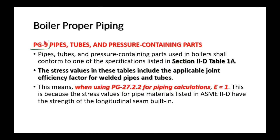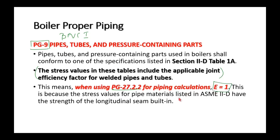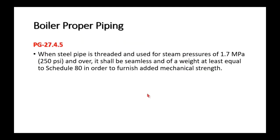PG-9 in BPVC Section I says pipes and tubes shall conform to one of the approved specifications, and that stress values in the tables include the applicable joint efficiency factor for welded pipes and tubes. So when using PG-27.2.2 for piping calculations, E must equal 1 — the penalty for the method of pipe construction is already built into the stress values.